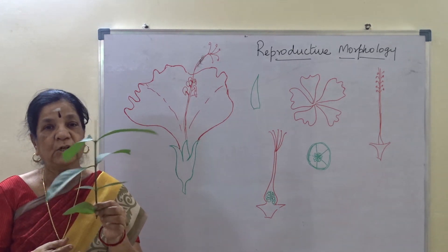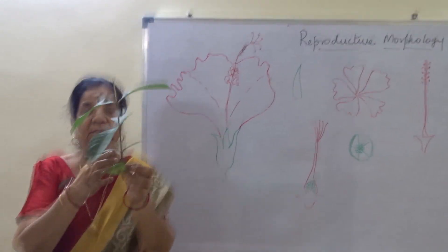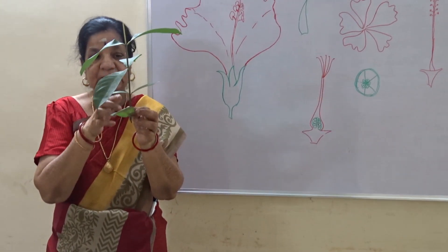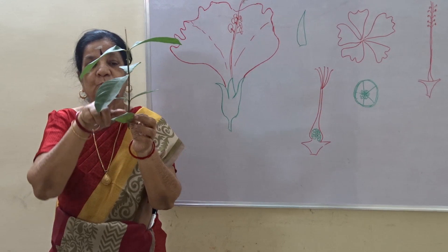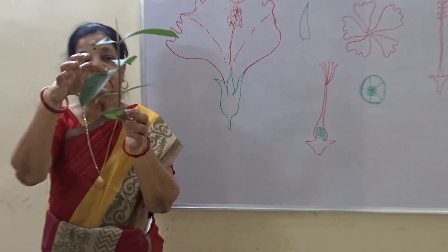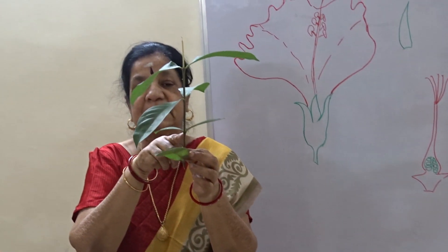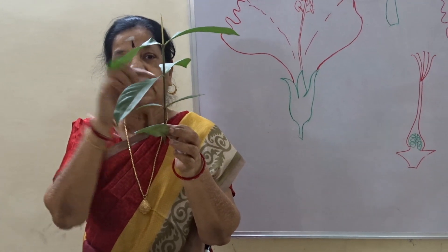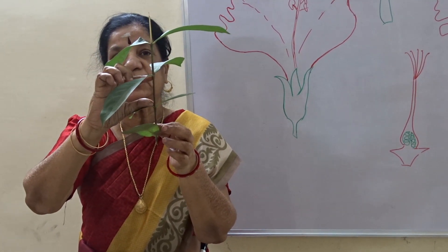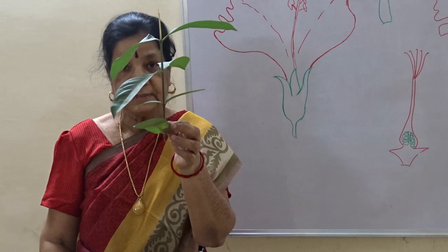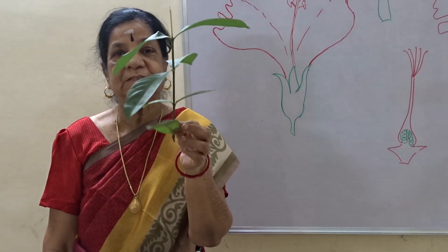Today I got a plant where it has a clear presence of nodes and internodes. These two leaves — from where they arise — are called nodes. The space between these two nodes is called internodes. I'll just show you with this plant.